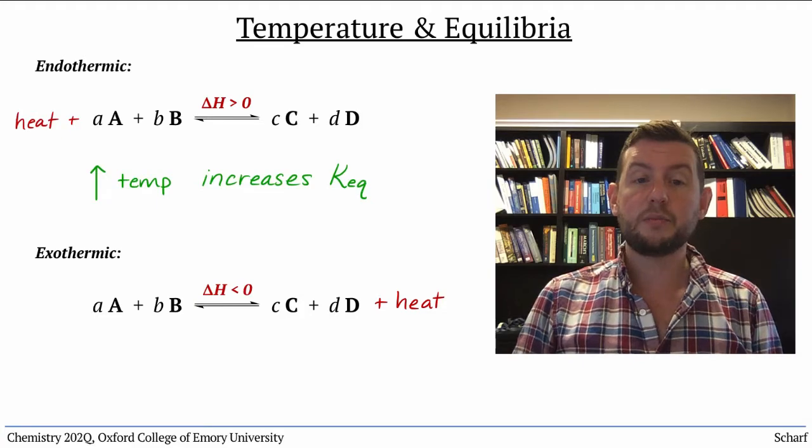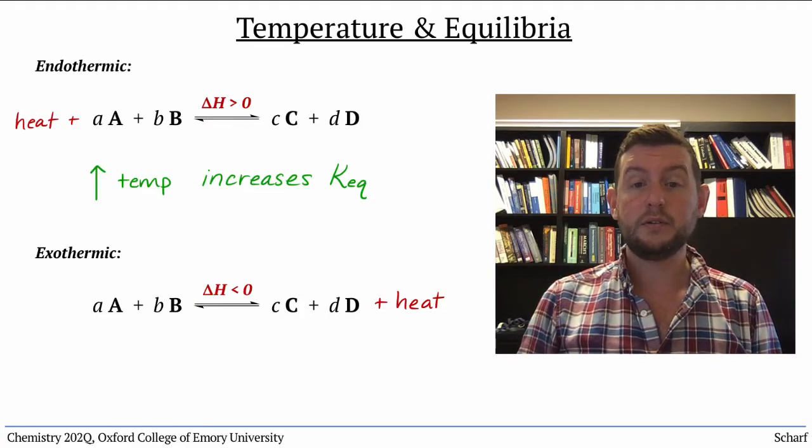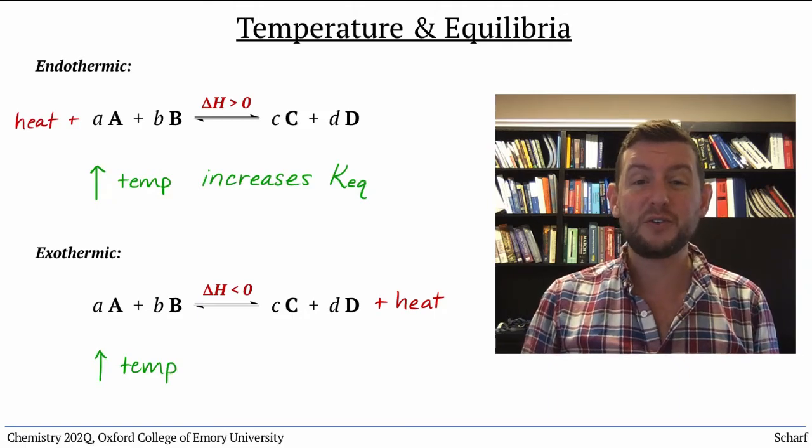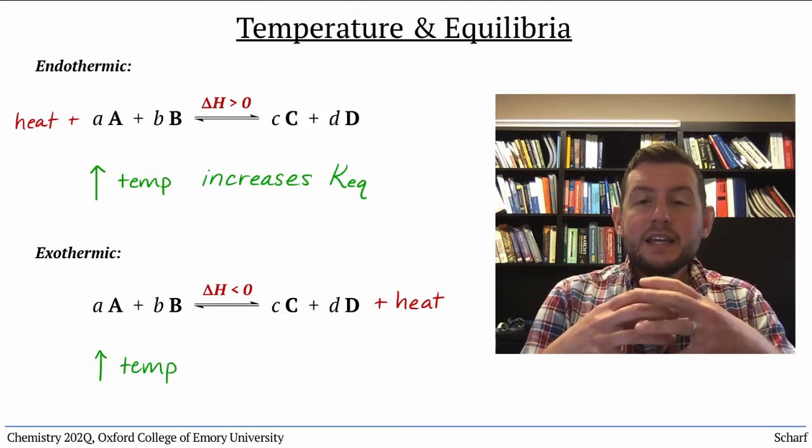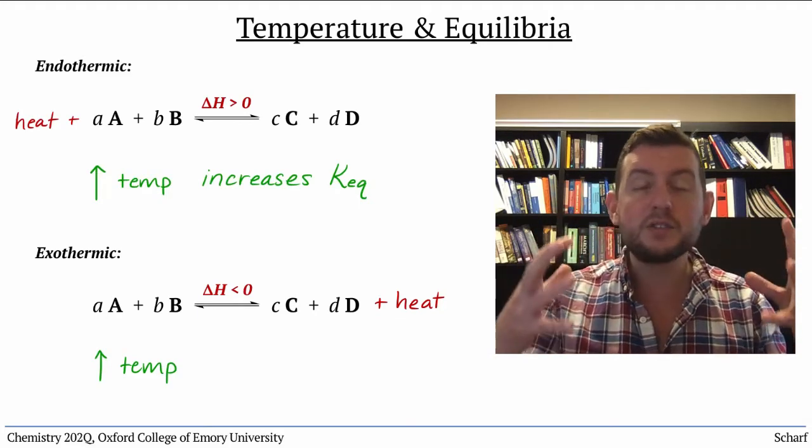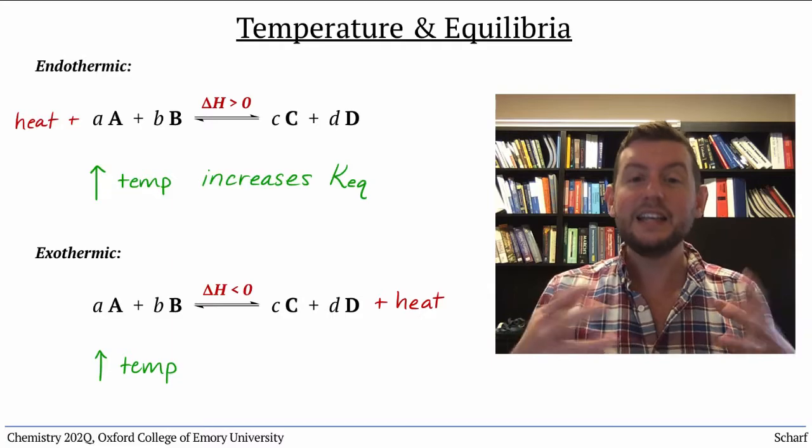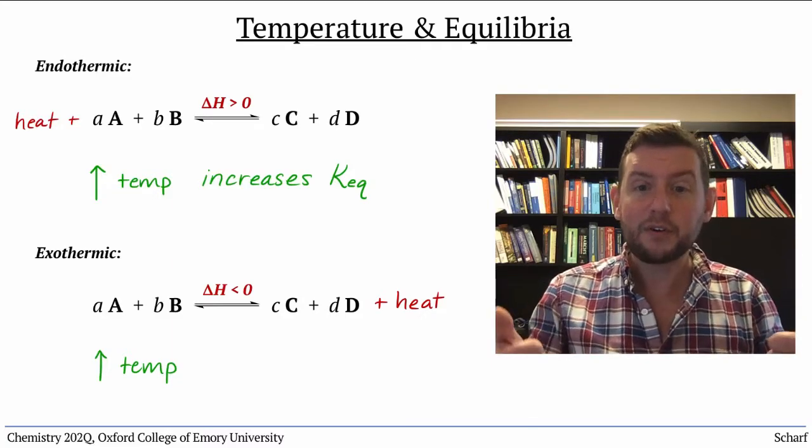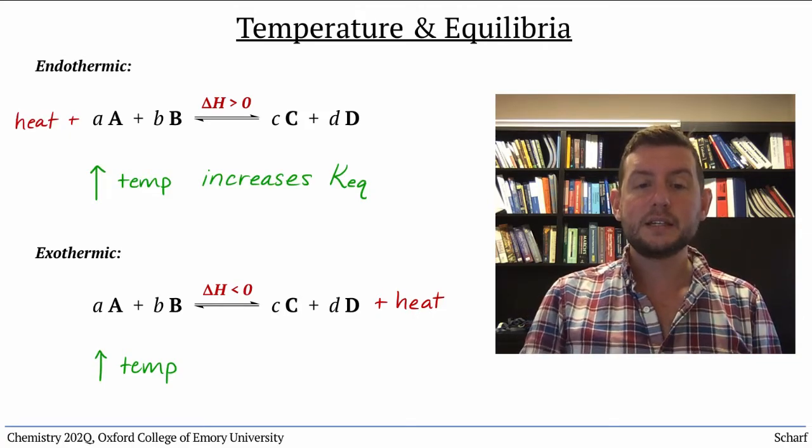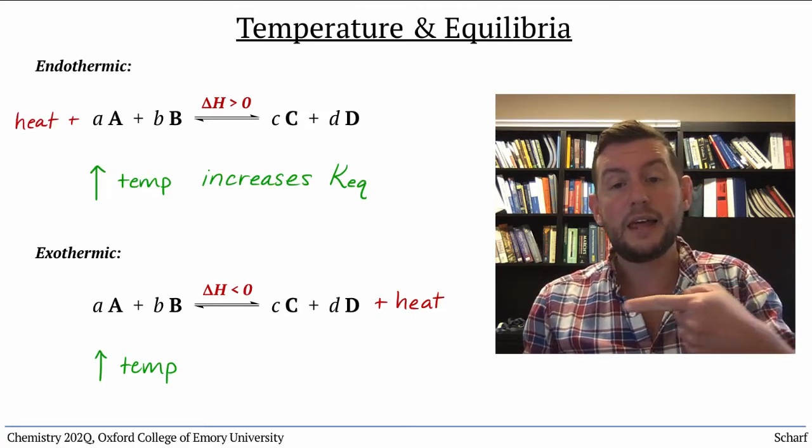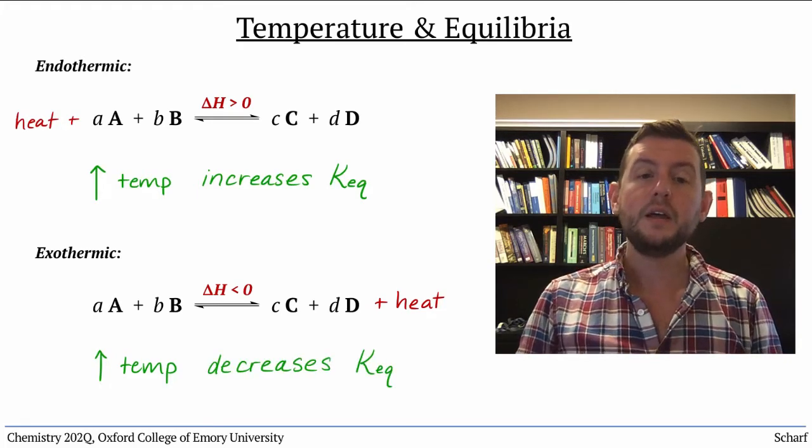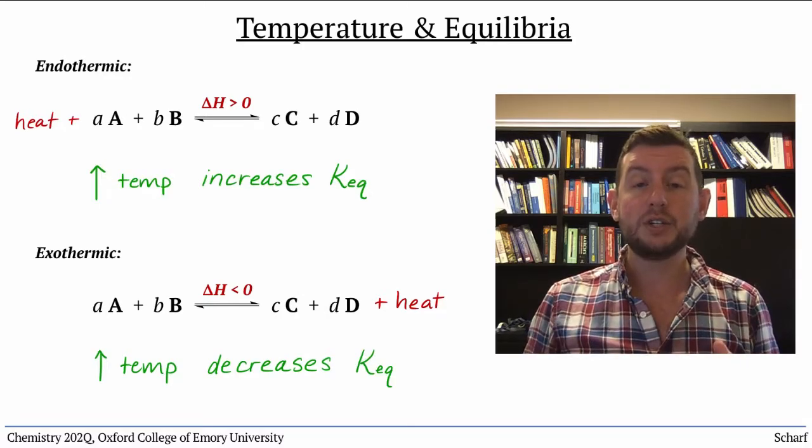For an exothermic reaction, the opposite is true. If you increase the temperature, you're making it more difficult for the reaction to proceed, because as it releases heat energy, if the surroundings are already hot, it's more difficult to heat them even further. So for exothermic reactions, raising the temperature makes the reaction less favorable and decreases Keq.